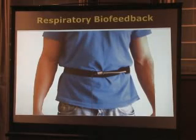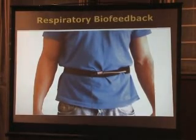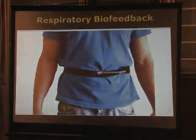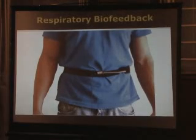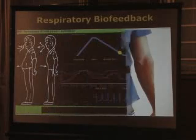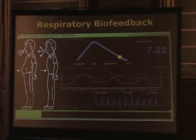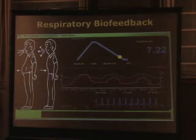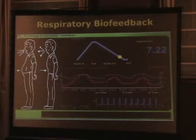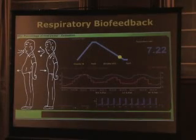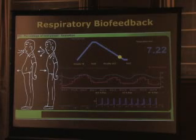Respiration rate and depth are important measures. The signals are derived from one or two sensor bands placed around the chest or abdomen, which respond to changes in girth due to breathing. The goal is to correct dysfunctional breathing patterns and to develop the ability to relax by breathing from the abdomen at about five to seven breaths per minute.